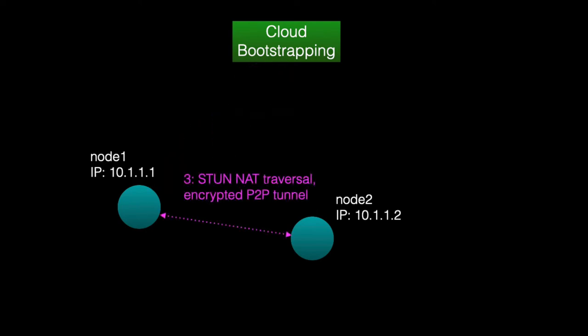EdgeVPN uses a P2P communication library called WebRTC to create tunnels between peers. These tunnels are encrypted and allow communication between nodes 1 and 2 without going through the cloud bootstrapping node.